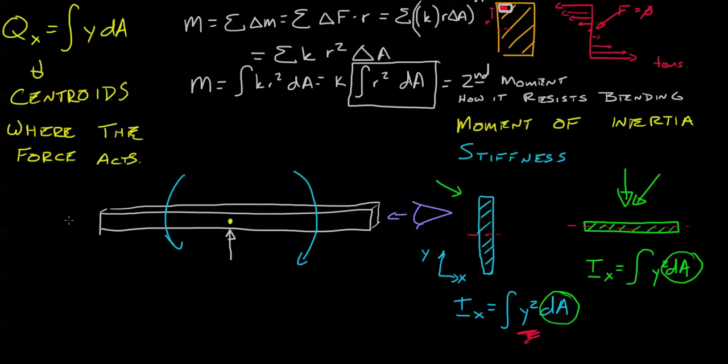In this example right here, we're looking at a ruler and we're trying to bend that ruler. We found that if we put it height-wise like this, it would resist bending more, it has higher stiffness, higher moment of inertia.